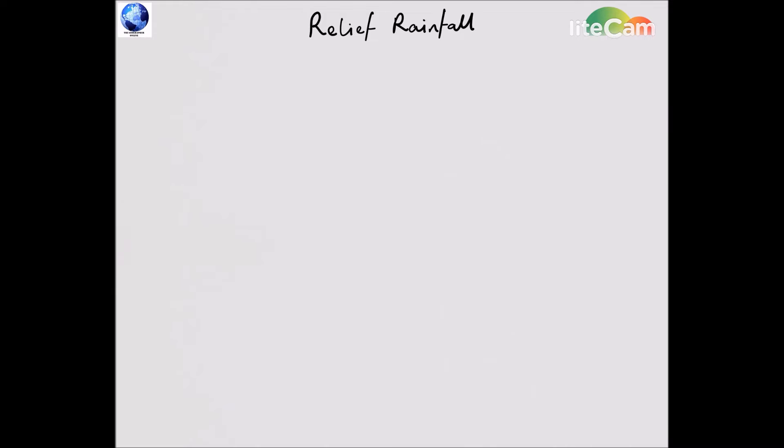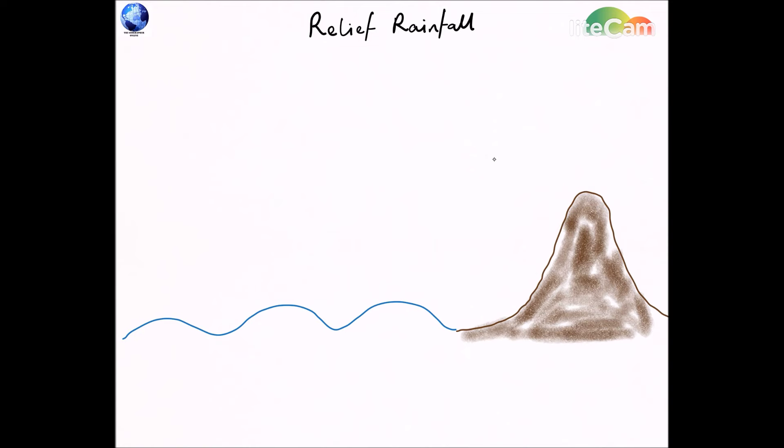But with all types of rainfall, you need to consider what is ultimately the golden rule of rainfall. For any form of rainfall to occur or precipitation, air must rise and cool. So each time you need to think, what is making air rise and what is making it cool? If you can't identify that factor, then no rainfall will occur.